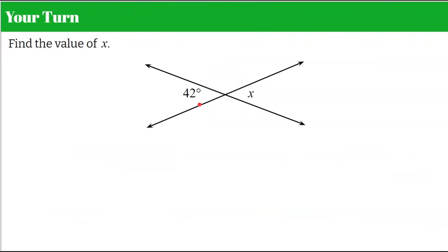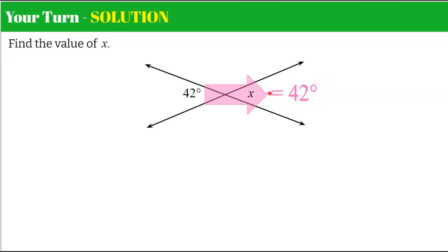Now we want to find the value of x when we have intersecting lines. Pause the video if you'd like to try it first. The solution: 42 degrees is a vertical angle to x — they are opposite each other, so vertical angles have the same measure, meaning x equals 42 degrees.